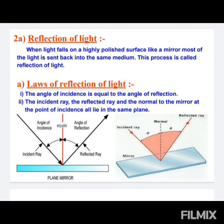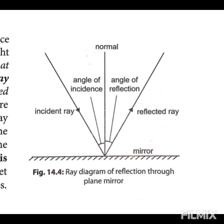Our next topic is the laws of reflection of light. Before we understand the laws, we should understand the meaning of the incident ray and the reflected ray. From the ray diagram, the ray of light that falls on the surface of the plane mirror is called the incident ray. The reflected ray is the ray that bounces back after falling on the plane surface. There is a normal — a perpendicular — between the incident ray and the reflected ray. The angle of incidence is the angle between the incident ray and the normal. The angle of reflection is the angle formed between the normal and the reflected ray.